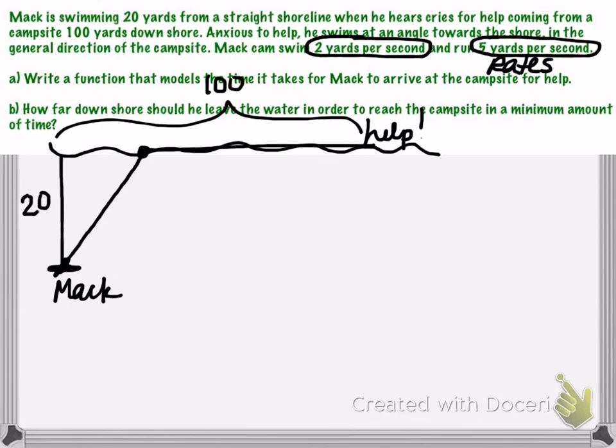We want to write a function to model the time it takes for him to arrive at the campsite for help. So ultimately we need to have an equation for time. We have a lot of unknowns. We don't know the total time, the time spent swimming, the time spent running, or the distance that he'll swim or run.